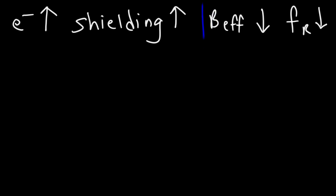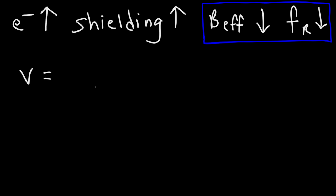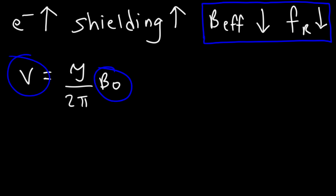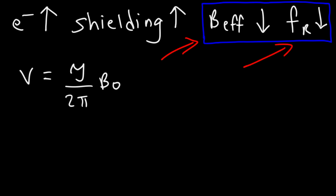You might wonder why magnetic field and frequency are proportional. There's a formula that explains it: the operating frequency of an NMR spectrometer equals the gyromagnetic ratio — which depends on the nucleus, whether it's hydrogen or carbon — divided by 2π, times the applied magnetic field. So if the magnetic field goes up, the operating frequency required to achieve nuclear magnetic resonance must go up as well. Thus, if the effective magnetic field the nucleus feels decreases, the frequency to achieve resonance decreases too.